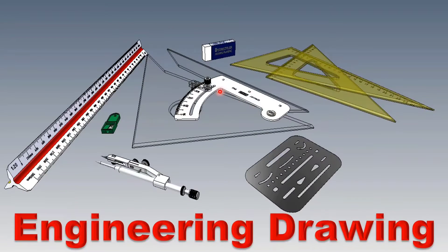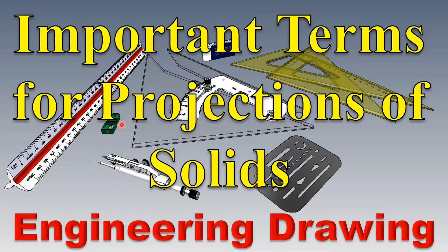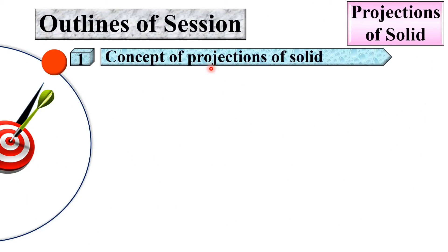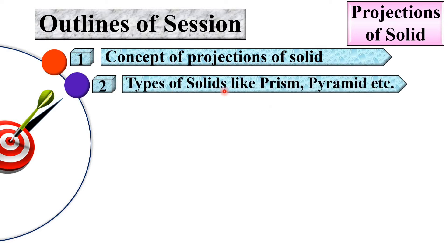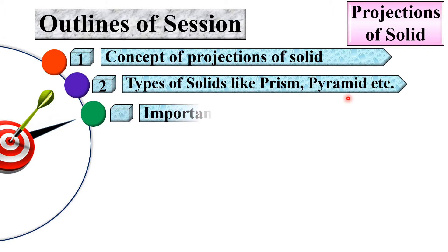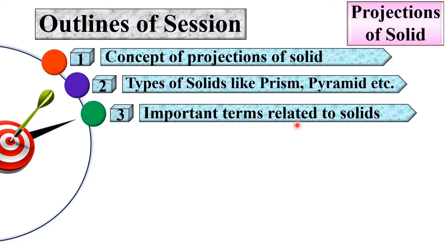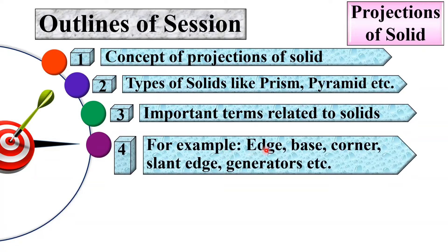Welcome to my engineering drawing playlist. Today we will discuss important terms for the projection of solids. See it carefully — it is very important for you to solve problems related to projections of solids. Let us see the outlines of the session: first, the concept of projection of solid; then types of solids like prism, pyramid, etc.; and next, important terms related to solids, for example edge, base, corner, slant edge, generator, etc.